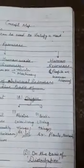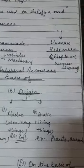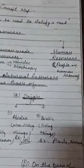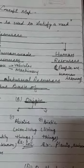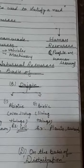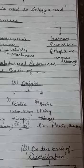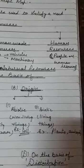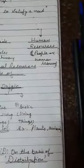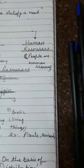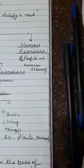Now the second category: on the basis of origin — origin means shurua. Do tarhe ki isme basis mein categories aati hain: abiotic and biotic. In previous classes you are very well acquainted with what is abiotic and biotic. Abiotic means non-living things — all non-living things come in this group, just like wood, stones, soil. These are non-living things. And biotic means living things — all living things come in this category, biotic means plants and animals.